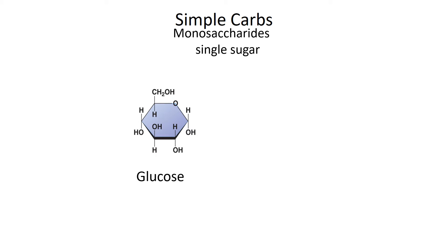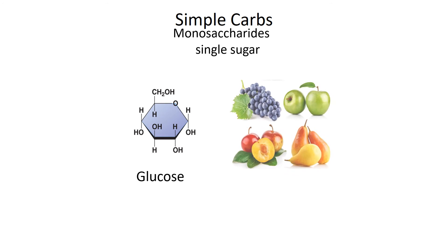Simple carbohydrates taste quite sweet to us. We get these from fruits and vegetables. A lot of things we consider vegetables — like tomatoes, squash, and cucumber — are actually fruits. Fruits are the things that produce seeds from the flowers, whereas a vegetable might be like spinach leaves or broccoli florets.